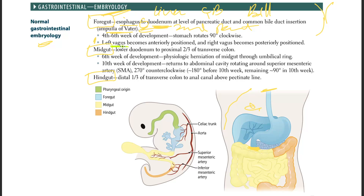One important point: the left vagus becomes anterior and the right vagus becomes posterior, because the stomach rotates 90 degrees. Left vagus is anterior, right vagus is posterior — just a rote memorization thing. That's the foregut.